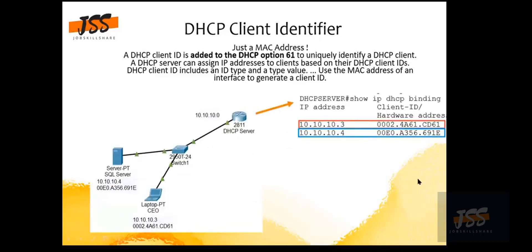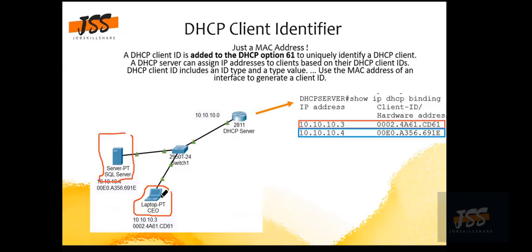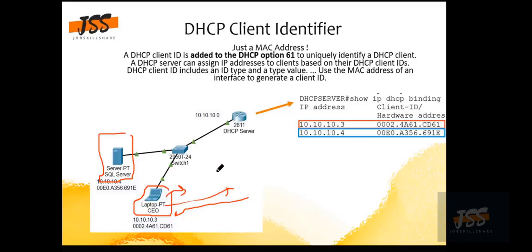Let me give you an example. In your production environment, sometimes you need to identify specific machines — let's say the CEO's machine or the SQL server. You do not want to change the IPs for these machines frequently. If the CEO goes home, uses a router or access point there, and then returns, he will be given a different IP. We want to avoid this. Similarly, if you are running a SQL server, you do not want to change its IP frequently.